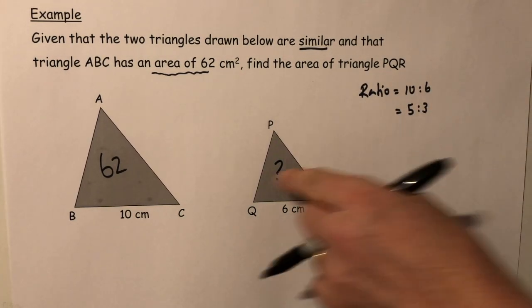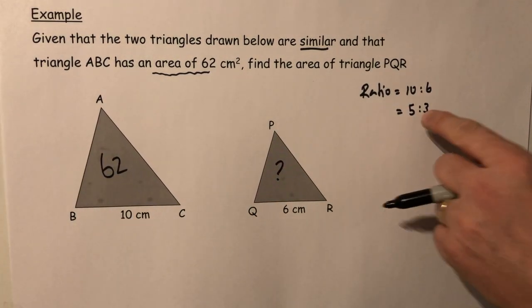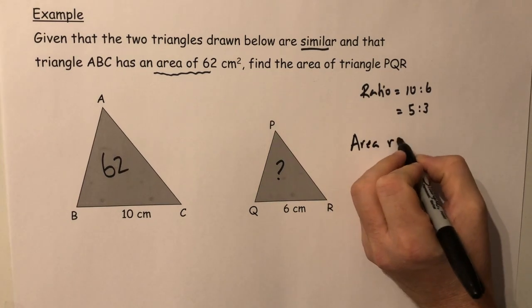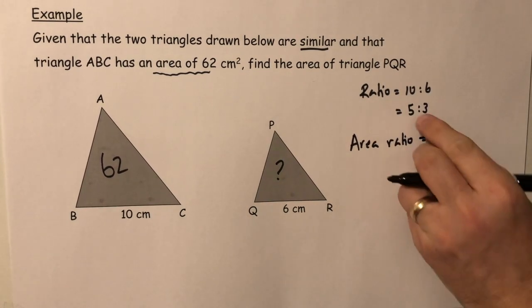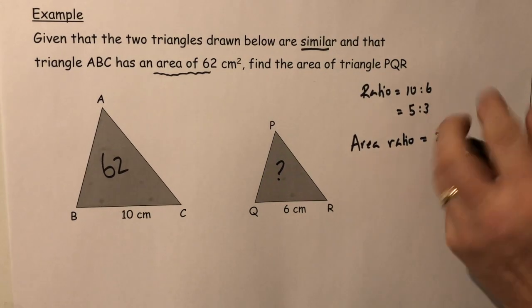What you have to recall here is that this ratio is for the lengths, so the lengths are all in this given ratio. That means that the area is in a different ratio, which is 5 squared to 3 squared.